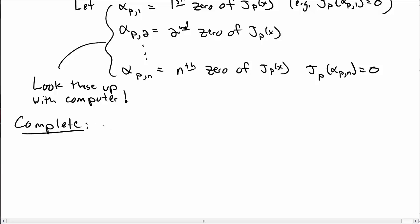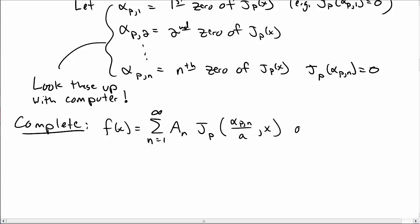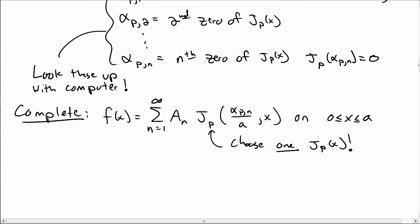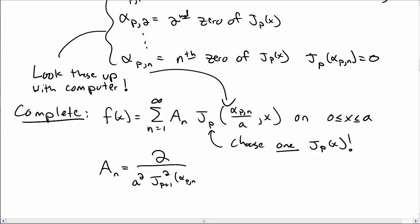Bessel functions are complete. You can write f(x) as a sum of coefficients A_n times J_p(α_{p,n} x / A) on the region from 0 to A. Notably, you're not summing over different Bessel functions — you choose one Bessel function and sum over its different zeros inside the argument. This is different from the other polynomial expansions.